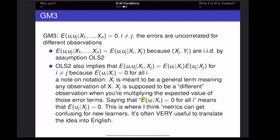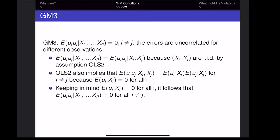When we say the expected value of the error term for observation i given its x value is zero for all i, j is simply some other observation. If you replace the subscript with j, that means it's a different observation that's not i. The math can look confusing, but focus on the ideas behind it. So if we know that the expected value of the error term for any observation given its x value is zero, then the third Gauss-Markov condition holds.